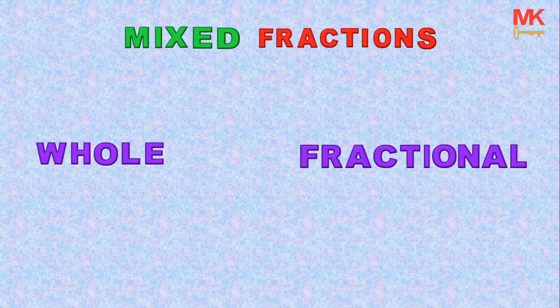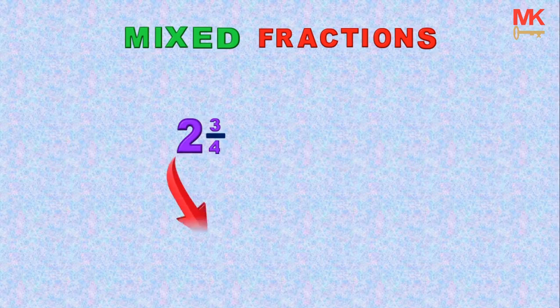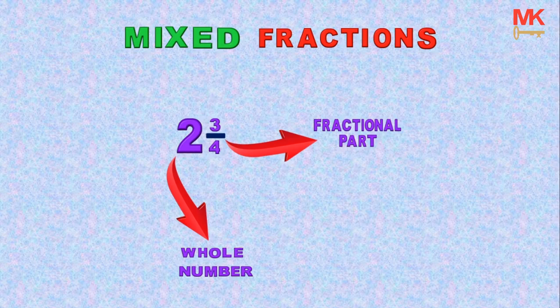So what is a mixed fraction? A mixed fraction is just a type of fraction that is made up of a whole number and a fractional part, usually a proper fraction. For example, the fraction 2 whole number, 3 out of 4 is a mixed fraction because it is made up of a whole part which is 2 and a fractional part which is 3 over 4.